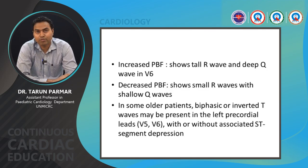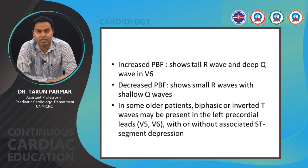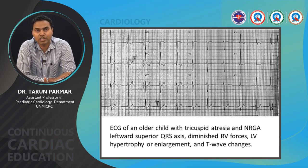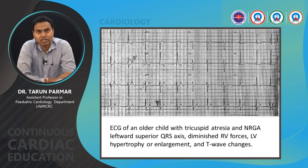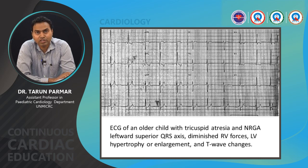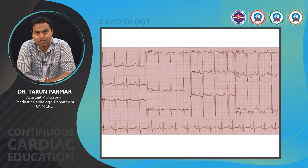Increased pulmonary blood flow can be seen as tall R waves and deep Q waves in V6; decreased pulmonary blood flow shows small R waves with shallow Q waves. In some older patients, biphasic or inverted T waves may be present in the left precordial leads with or without associated ST segment depression. This ECG from an older child with tricuspid atresia in NRGA again shows a left and superior QRS axis, LV hypertrophy or enlargement, diminished RV forces, and some T-wave changes.